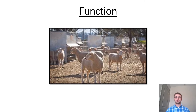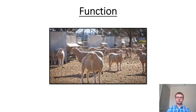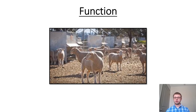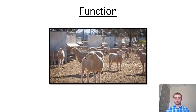Our second priority in market lambs is function. We've described skeletal build and what it means for animals to be efficient in terms of body shape and fleshing ability. Function matters commercially because feedlots require correct skeletal structure for efficient feed conversion and profitability. From a judging perspective, we need to understand structure well enough to apply it to the balance and build of the animal, as most judging ring lambs will be show wethers.